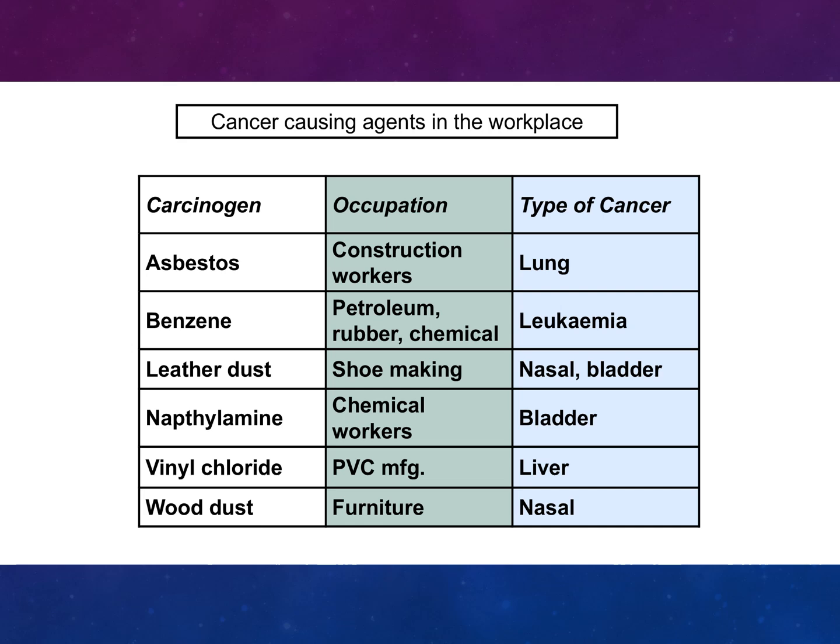Looking at types of cancer carcinogens in the workplace: asbestos affects construction workers, leading to lung cancer; benzene from petroleum, rubber, and chemical industries leads to leukemia; leather dust in shoemaking leads to nasal and bladder cancer; naphthylamine affects chemical workers causing bladder cancer; vinyl chloride results in liver cancer; and wood dust in furniture work results in nasal cancer.